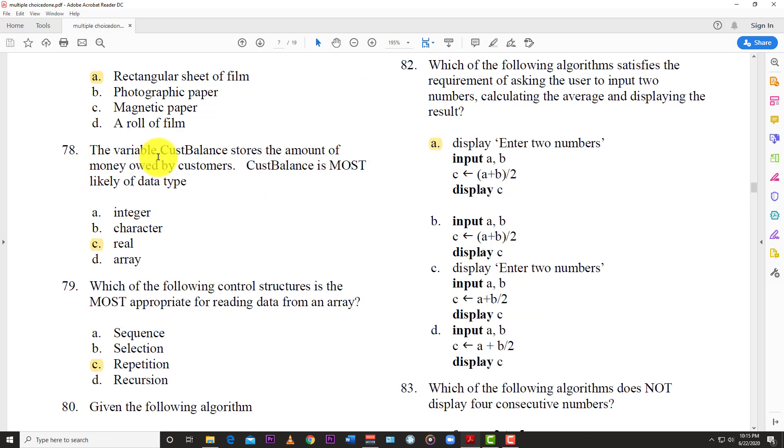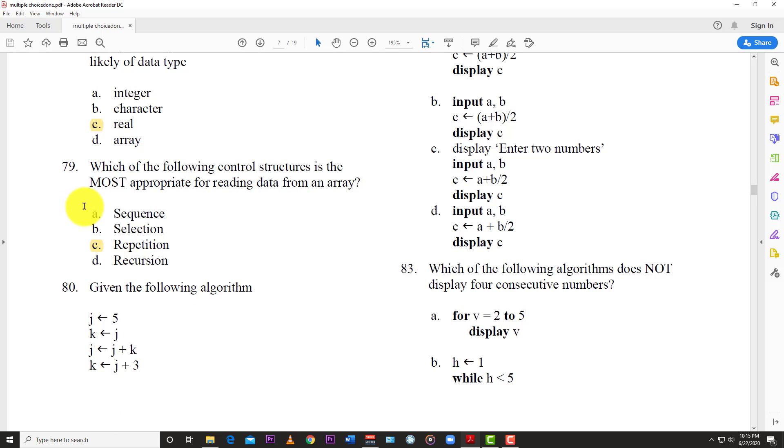Question 78: The variable cost balance towards the amount of money owed by a customer. Cost balance is most likely a type, a data type, C, real. So cost I would assume is short for customer balance. So you put that data type in whatever MIS you're using, whatever system storage you're using, whatever database you're using. And so of course, customer balance is most likely a type of real data type. Question 79: Which of the following control structures is the most appropriate for reading data from an array? And so the answer here is C, repetition.